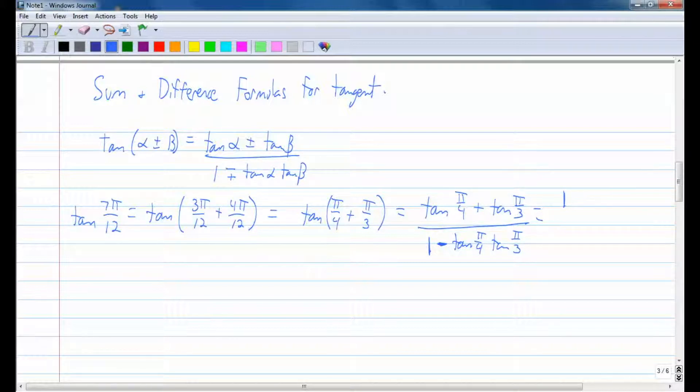The tangent of π/3 is the square root of 3. That's over 1 minus the tangent of π/4 is 1 times the tangent of π/3, that's the square root of 3. All right, so you really don't have to write the 1 down in front. I have 1 plus the square root of 3 over 1 minus the square root of 3.